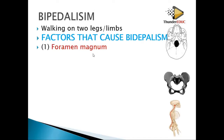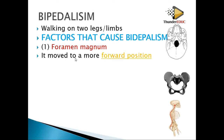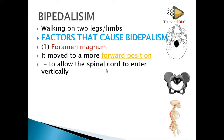Number one: foramen magnum. The position of the foramen magnum will show whether an organism is bipedal or quadrupedal. If they are walking on four limbs, it's quadrupedal. If you are bipedal, the foramen magnum moves to a more forward position. This allows the spinal cord to enter vertically — as you saw from that diagram above, the spinal cord enters directly into the head — so it makes the person walk upright.